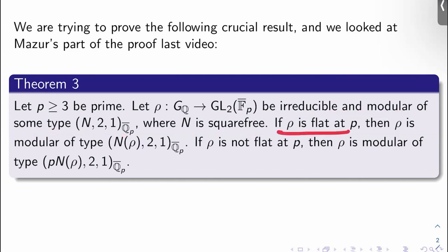If ρ is flat at p, then ρ is actually modular of type (N(ρ), 2, 1) over Q̄_p, where N(ρ) is the conductor of ρ. If ρ is not flat at p, then ρ is modular of type (p·N(ρ), 2, 1) over Q̄_p.